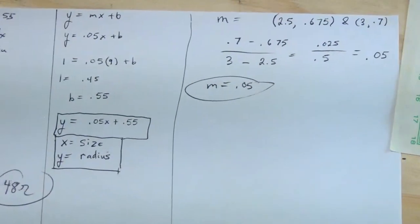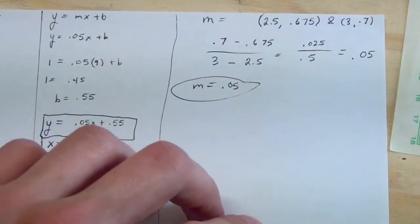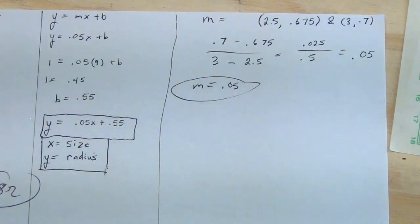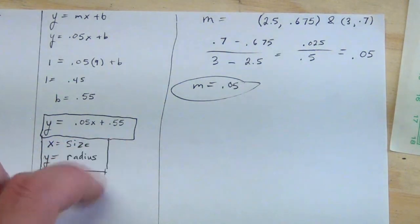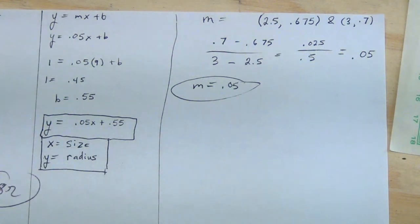With finding the equation, I found the slope. This is easy, like easy peasy algebra 1, geometry, stuff like that. But right here is your equation: y equals 0.05, which is the slope, times x, which is going to be your size, plus 0.55. And that will give you the radius. So if you want the diameter, obviously you're just going to multiply the radius by 2.